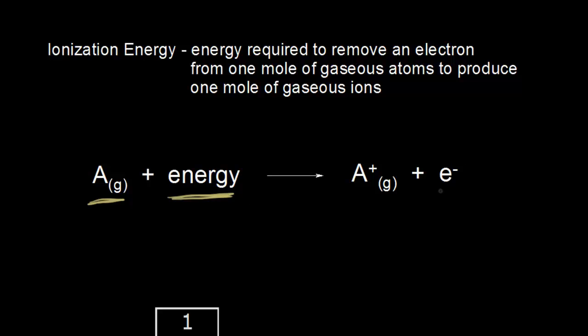If you take away an electron, you no longer have equal numbers of protons and electrons — you'd have one more proton than electrons, giving you a plus one charge, so you form an ion. Ionization energy is always going to be positive; it always takes energy to pull an electron away. The units are kilojoules per mole.